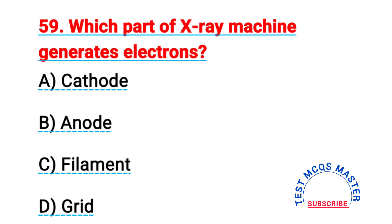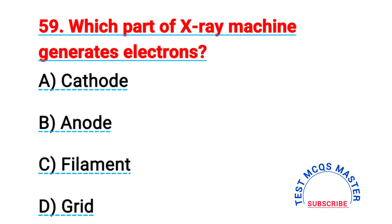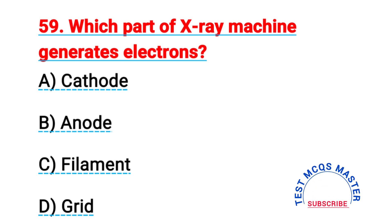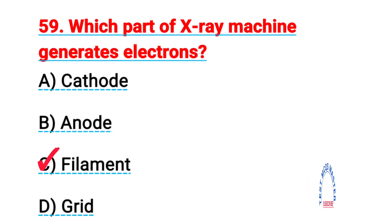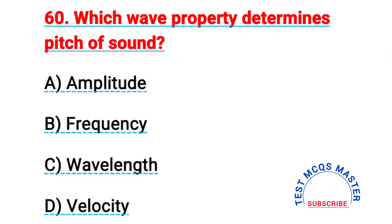Question number fifty-nine: which part of an X-ray machine generates electrons? The right answer is C, filament. Question number sixty: which wave property determines the pitch of sound? The right answer is B, frequency.